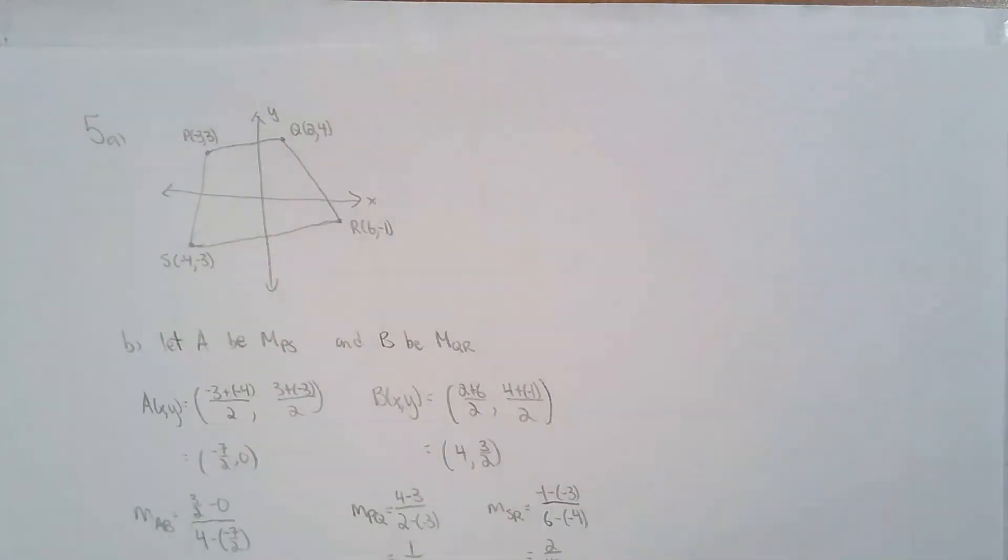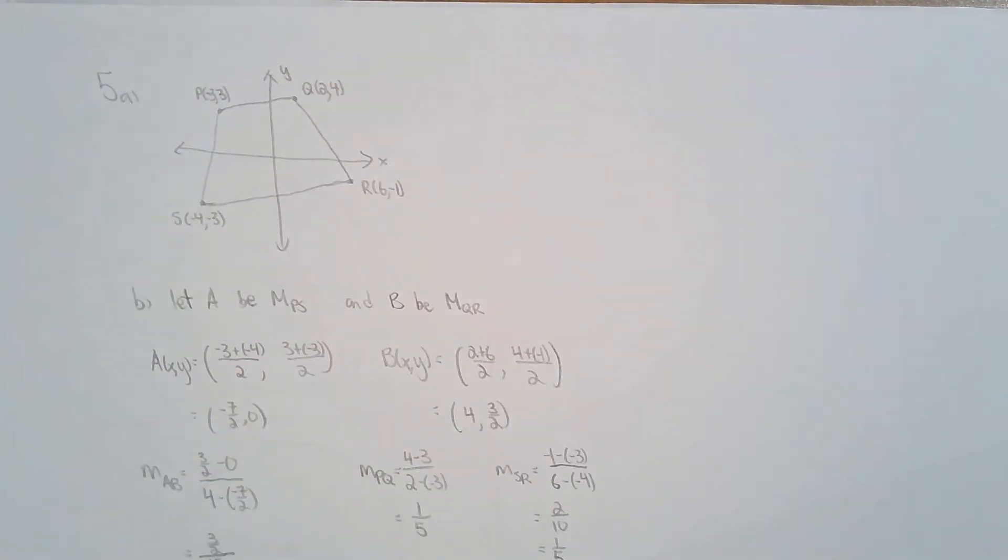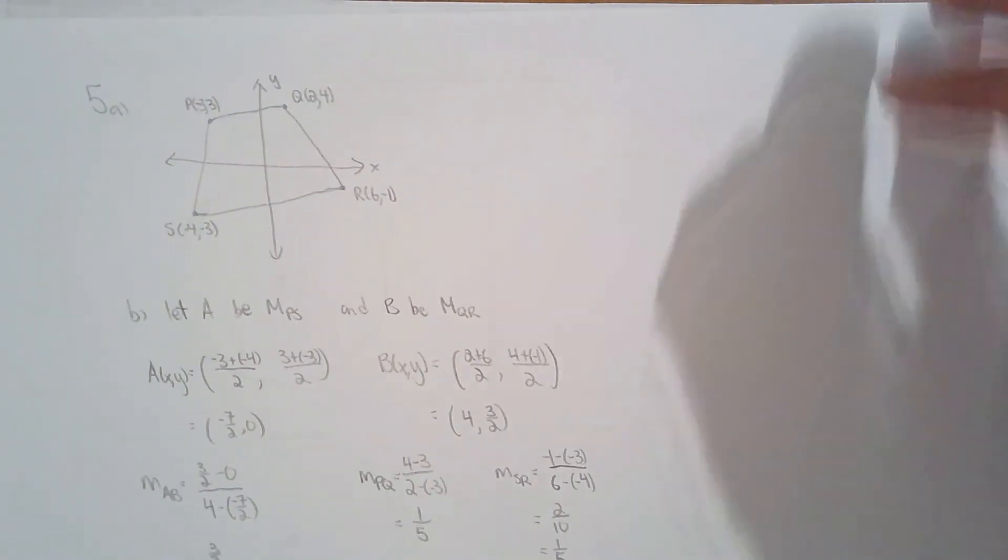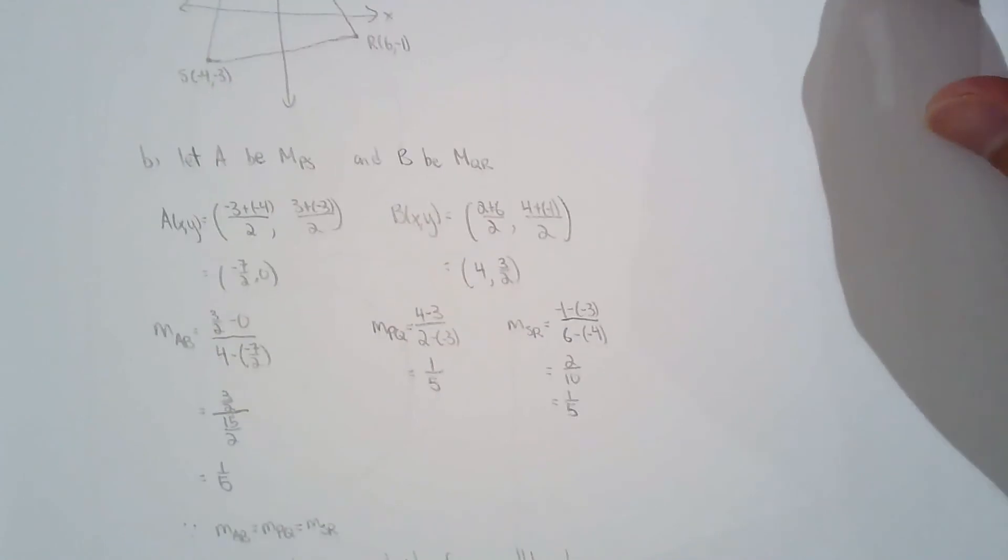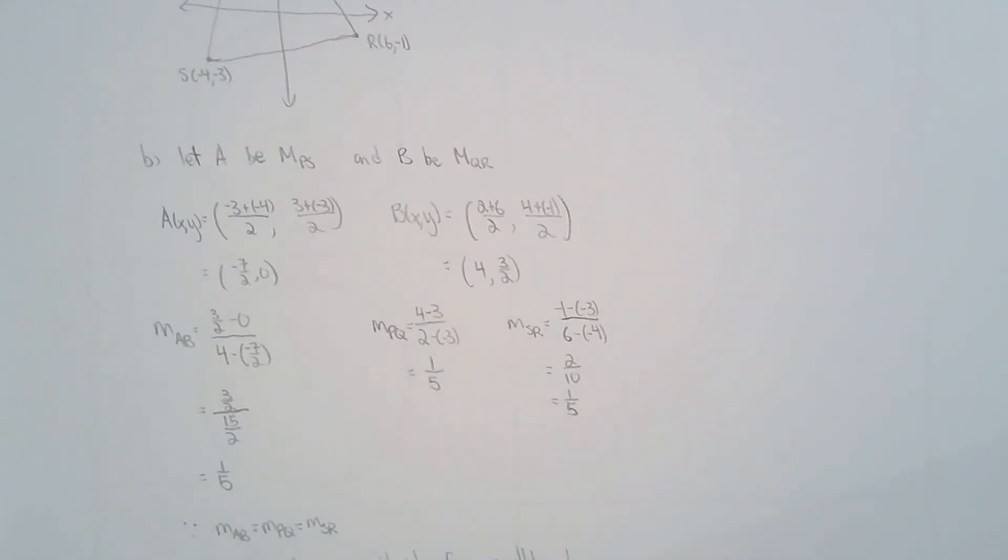For question five, they wanted me to draw a trapezoid. Then verify that the line segment joining the midpoints of the non-parallel sides of the trapezoid is parallel to the other two sides.